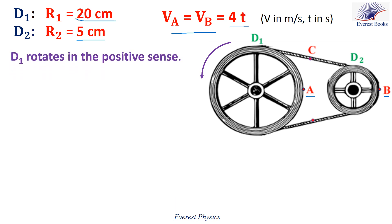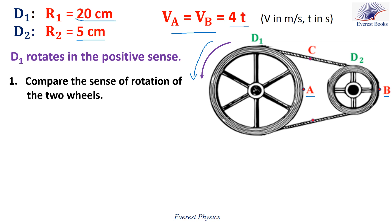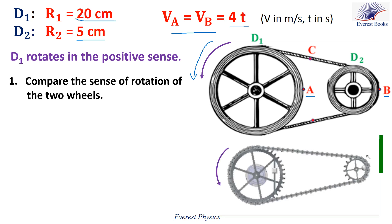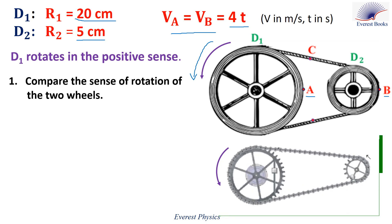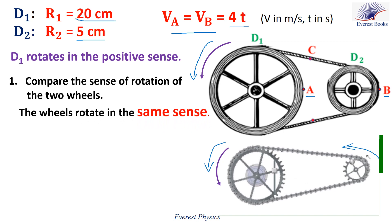The disc D1 rotates in the positive sense, or counterclockwise. Number one: compare the sense of rotation of the two wheels. Observe this simulation. As the first disc rotates counterclockwise, then the second disc also rotates counterclockwise. So the two wheels rotate in the same sense.